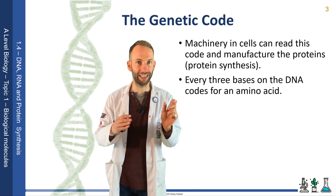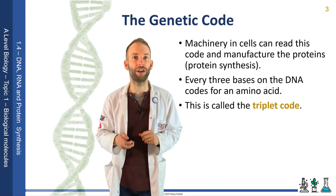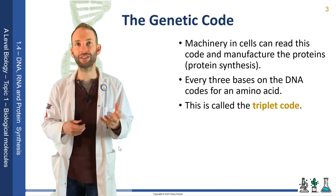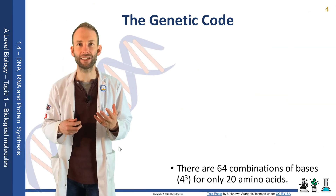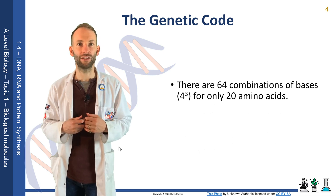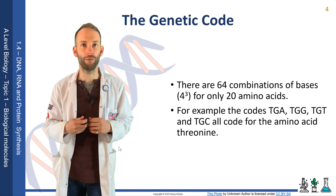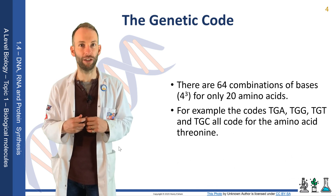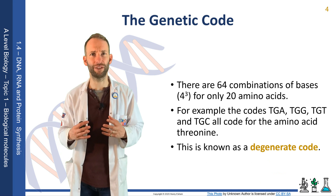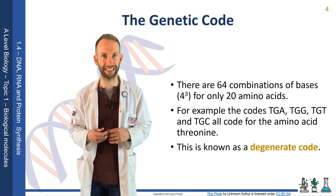You take the first three bases — maybe it's T, T, A — that is the code for one amino acid. We call that the triplet code. Now, there are 64 combinations of bases, if you think about it, but there's only 20 amino acids. So there is actually more than one triplet code for each amino acid. We therefore say that the code is a degenerate code — this idea that we've actually got more combinations of bases than we need for the amino acids.